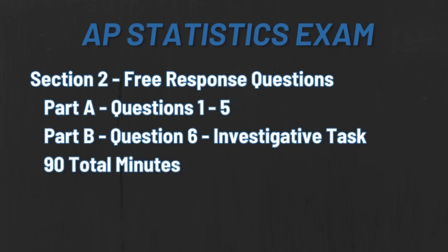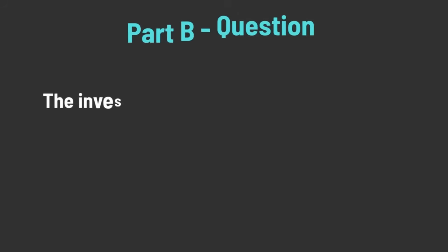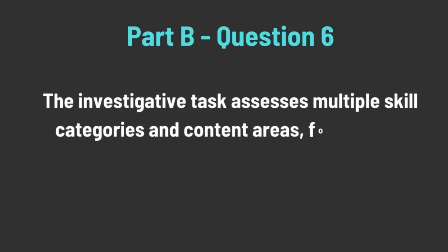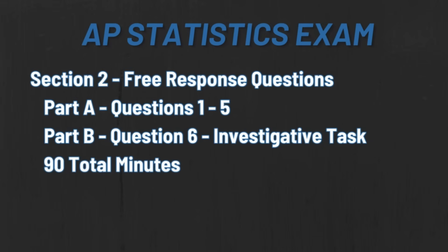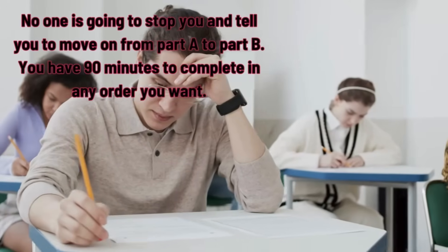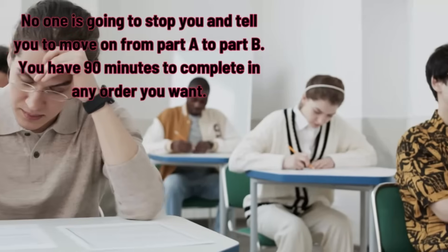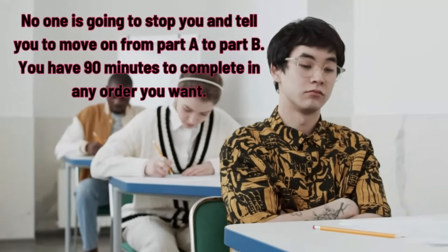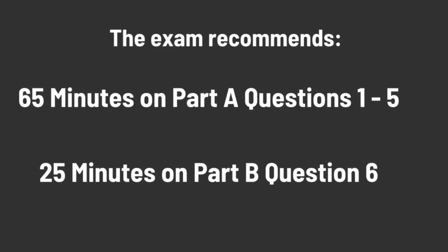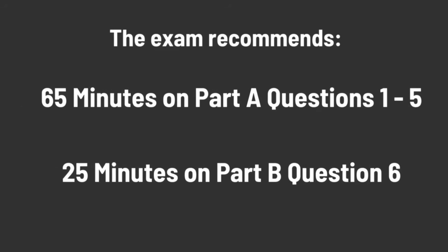Part B is question six, called the investigative task. The investigative task assesses multiple skill categories and content areas, focusing on the application of skills and content in new contexts or in non-routine ways. In total, you have 90 minutes for all six questions. No one is going to stop you and say now move from Part A to Part B — you get all six questions at the exact same time, and you have 90 total minutes to do all of them in any order you want. AP recommends 65 minutes on Part A and 25 minutes on Part B, but you don't have to follow that.